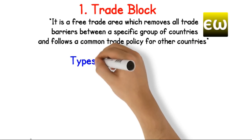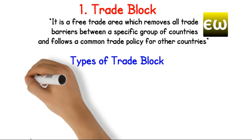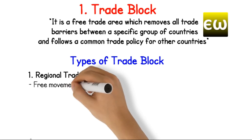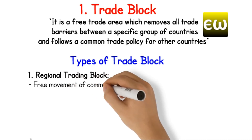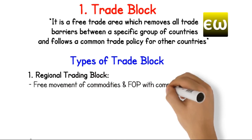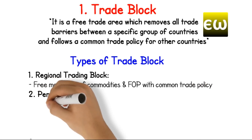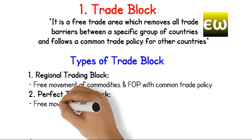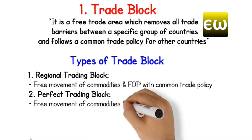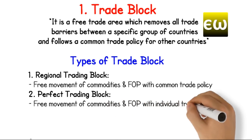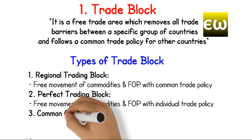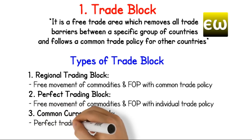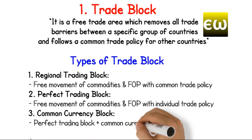Types of Trade Block. 1. Regional Trading Block: Free movement of commodities and factor of production with common trade policy. 2. Perfect Trading Block: Free movement of commodities and factor of production with individual trade policy. 3. Common Currency Block: Perfect trading block plus common currency.